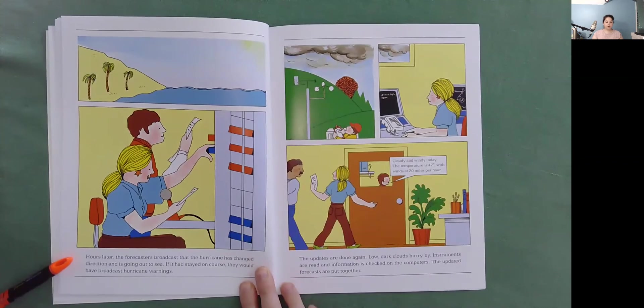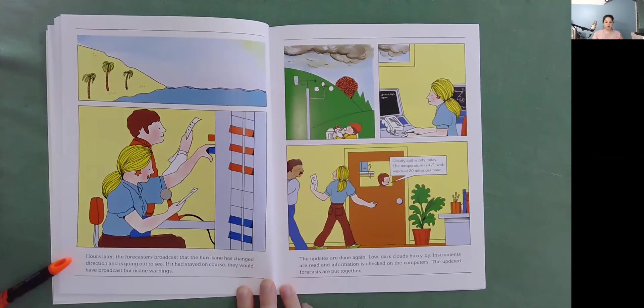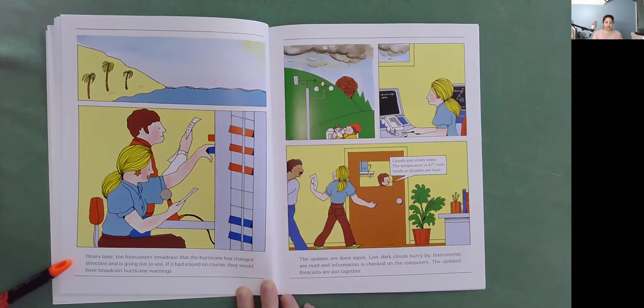Hours later, the forecasters broadcast that the hurricane has changed direction and is going out to sea. If it had stayed on course, they would have broadcast hurricane warnings.